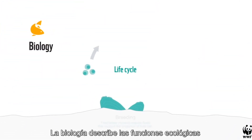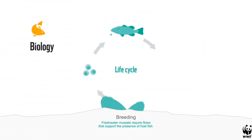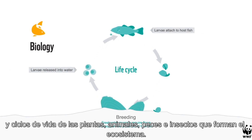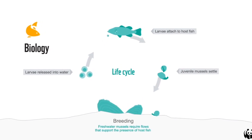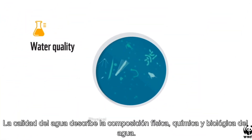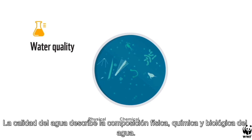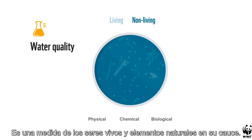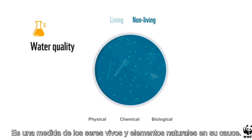Biology describes the ecological functions and life cycles of the plants, animals, fish and insects who make up the ecosystem. Water quality describes the physical, chemical and biological makeup of the water. It's a measure of the living and non-living elements present in a watercourse.